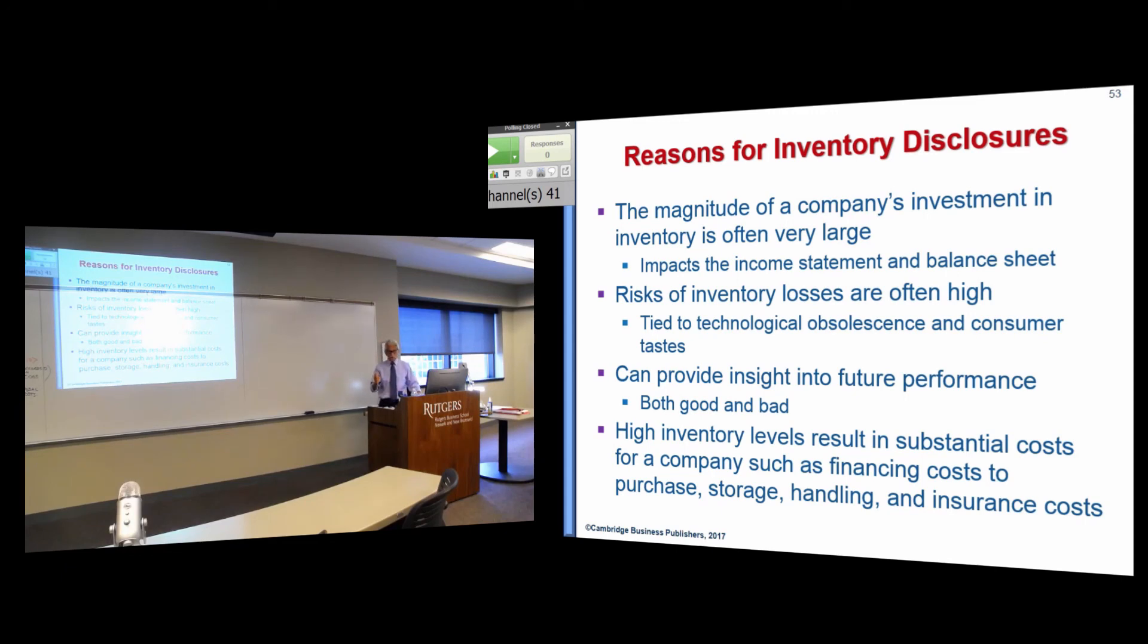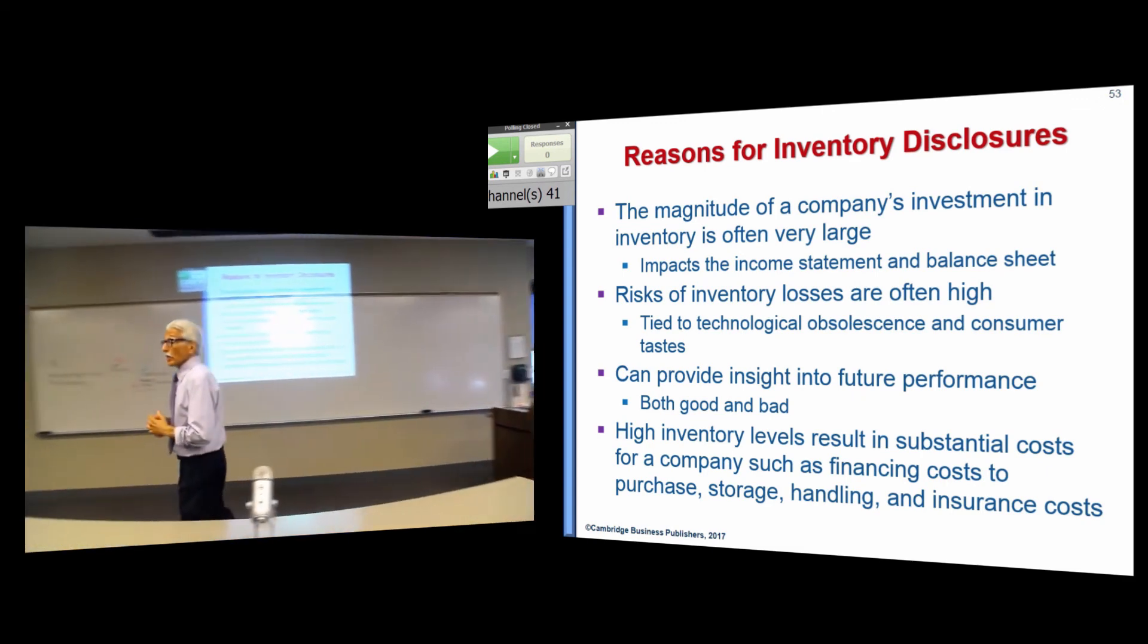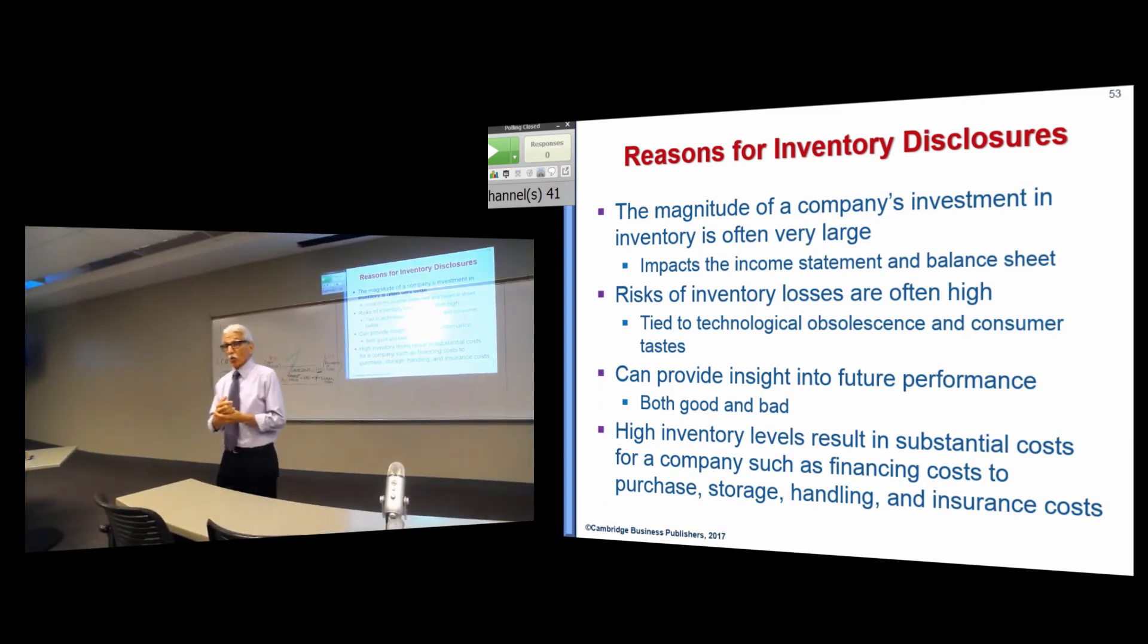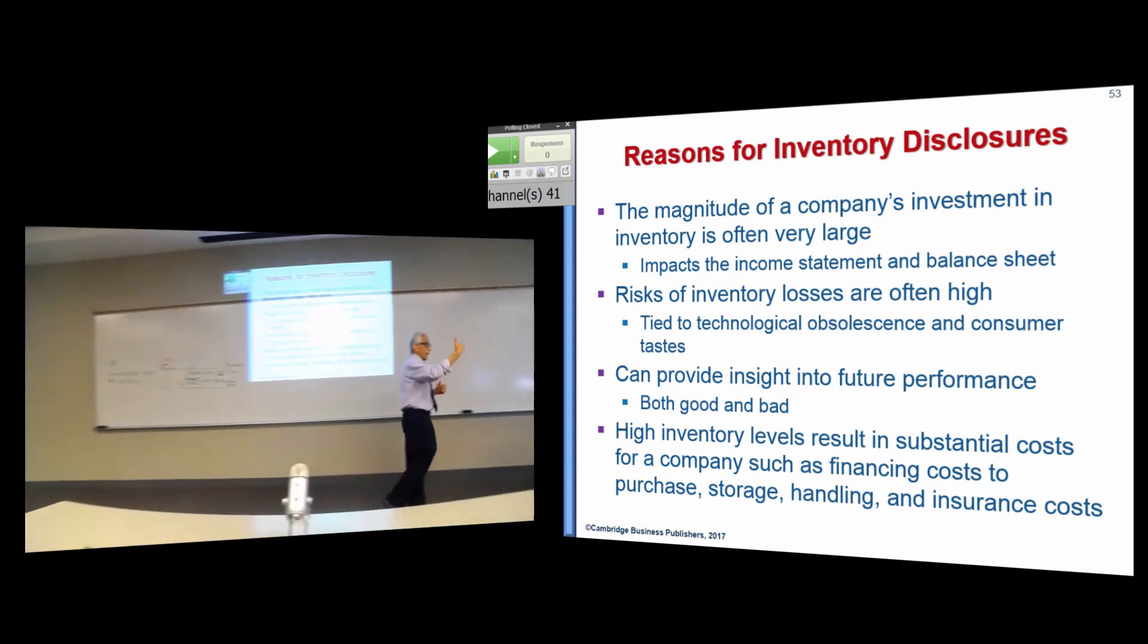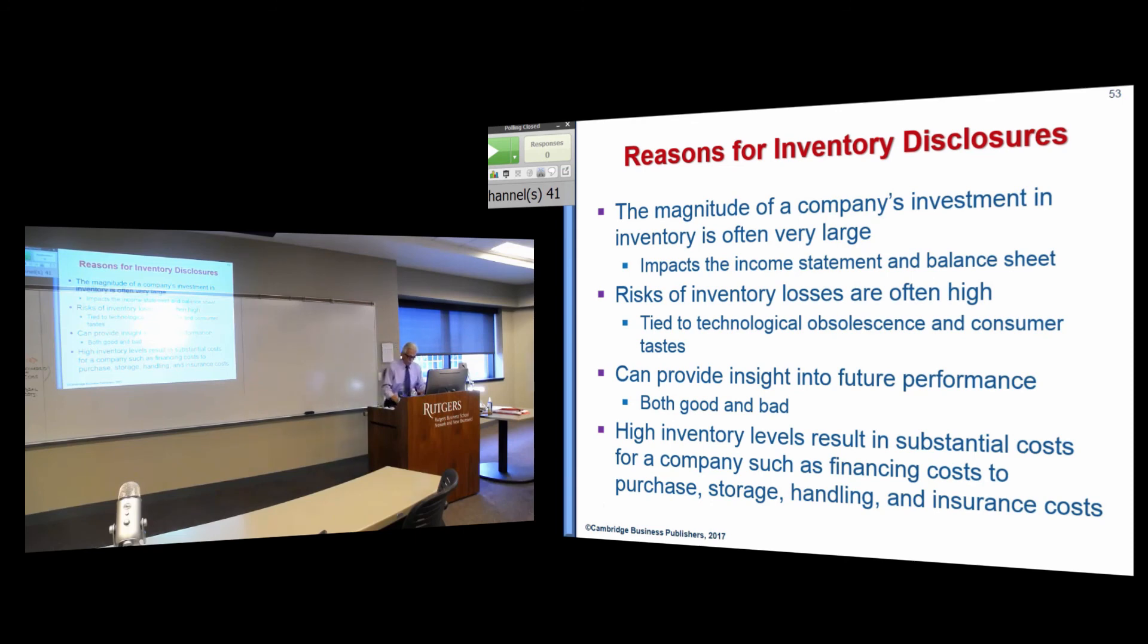And especially in manufacturing companies, you may in fact buy more inventory for what other reason? Why would you buy, if you're a manufacturer, why would you be buying up materials and... Economies of scale, a little lower price? Yeah, yeah. Because there could be, you might be anticipating price increases. And as long as the raw materials are not going to spoil, or they're not subject to obsolescence quickly, you could stock up on those parts now and then use them to go to spoil. Alright, so any questions on lower cost of market or the inventory disclosures?